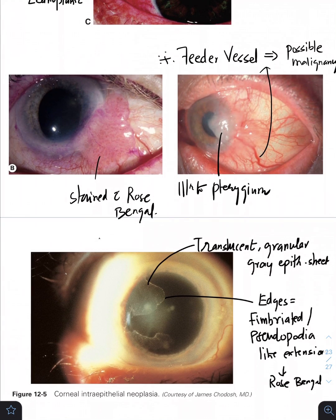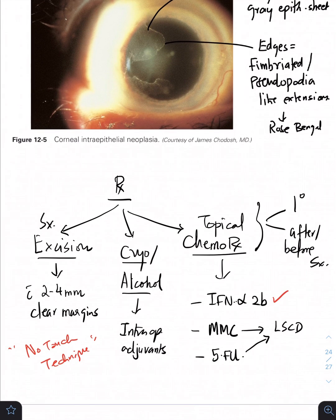This is the corneal intraepithelial neoplasia where you can see the translucent granular gray epithelial neoplasia borders and these edges are very characteristic fimbriated or pseudopodia-like extensions which stain better with rose bengal.